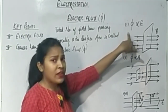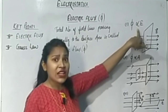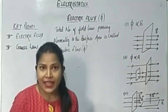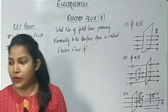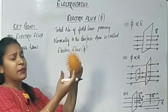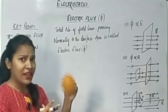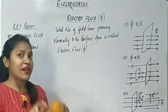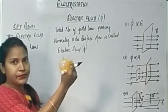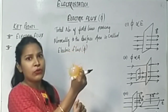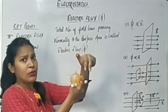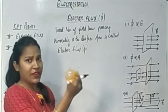Electric flux depends on the electric field. If the charge is larger, the electric field is stronger, the number of field lines passing through is more, and therefore the electric flux will be more.